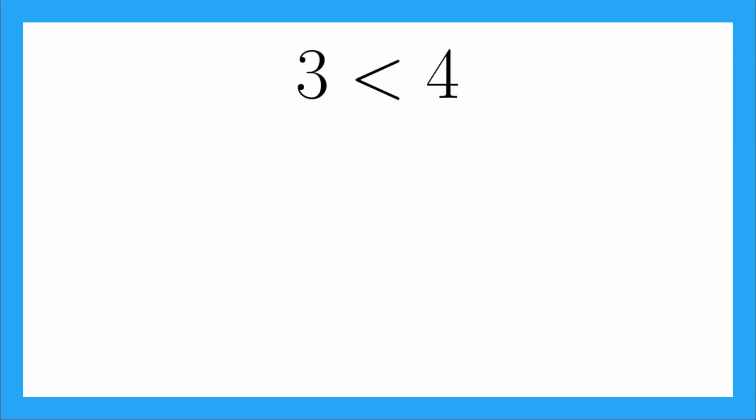So let's say we have 3 is less than 4. That's true, right? Of course, 3 is less than 4. But what if now I have to divide both sides by negative 1? So if I divide this side by negative 1, and this side by negative 1? Remember, as long as I do it to both sides, it's okay.